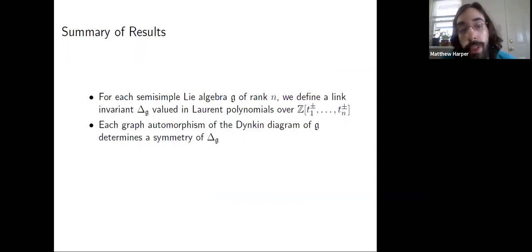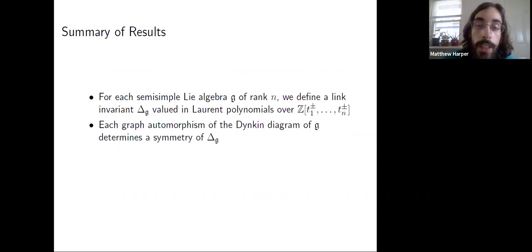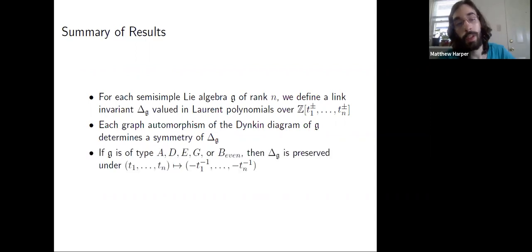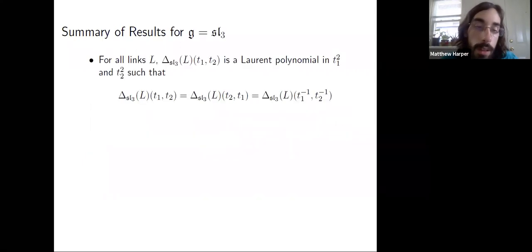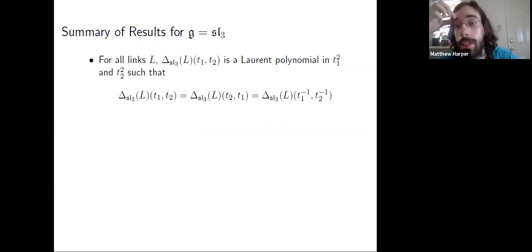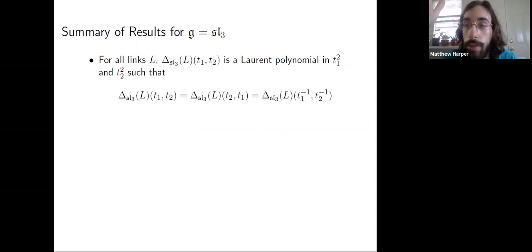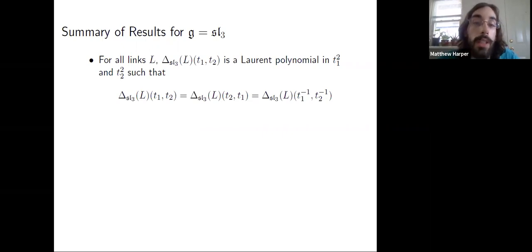Some properties of this invariant: every Dynkin diagram automorphism corresponding to G gives you some symmetry of the polynomial. You also have, in these special types, that this invariant is preserved under changing all of the variables to their negative inverse — so this is some kind of anti-palindrome property. For the SL3 case specifically, it's actually in the variables t_1 squared and t_2 squared, meaning the minus-inverse substitution just switches t_1 and t_2 to their inverses, and we also have the symmetry that we can exchange the roles of t_1 and t_2 without changing the polynomial invariant.